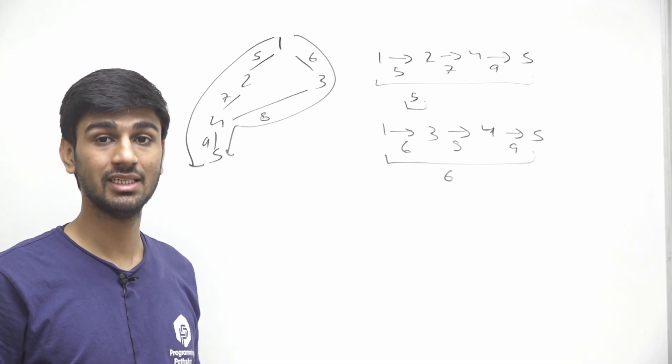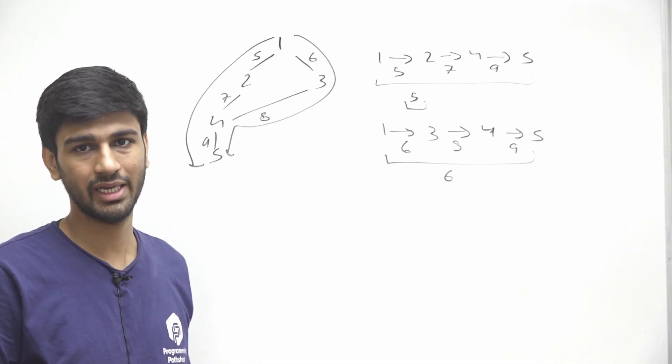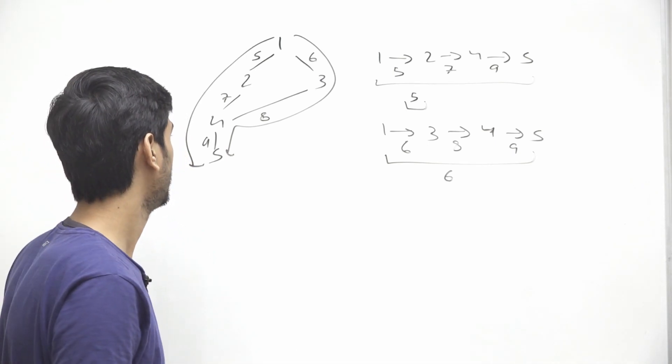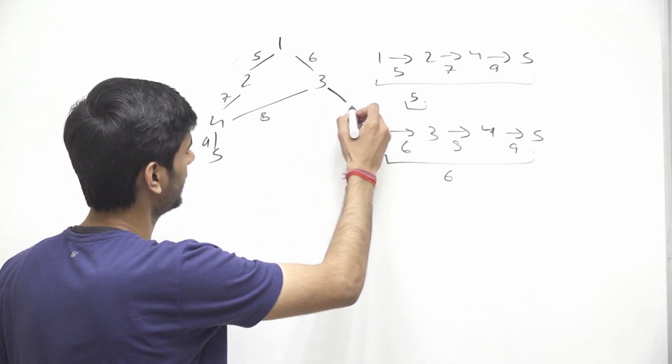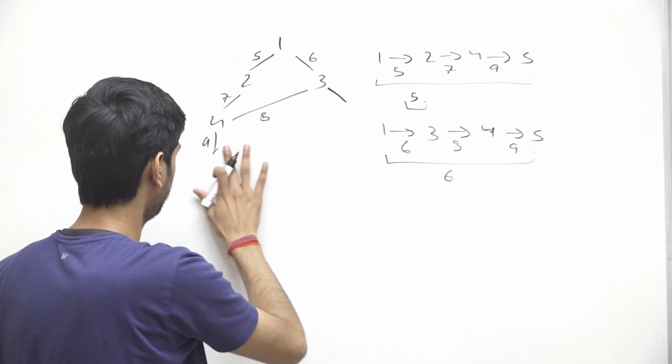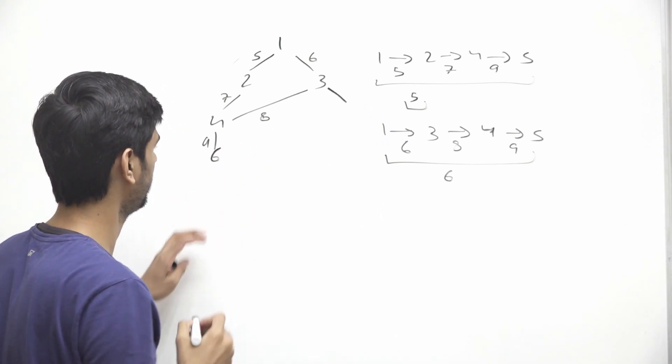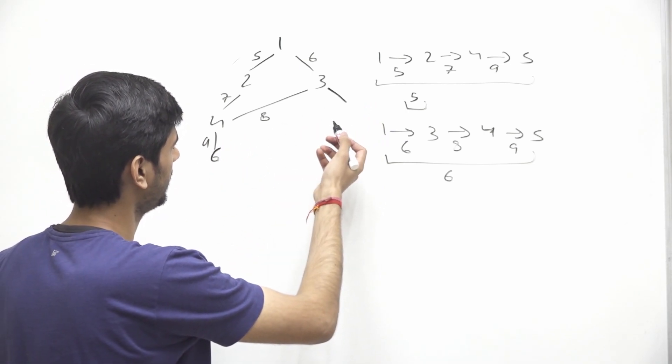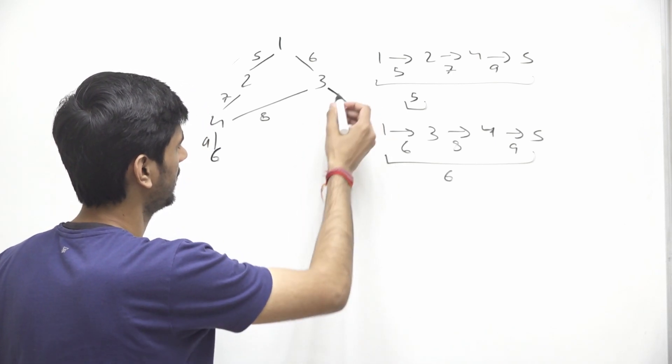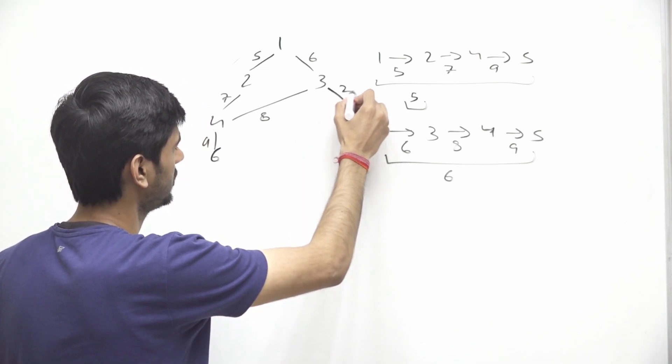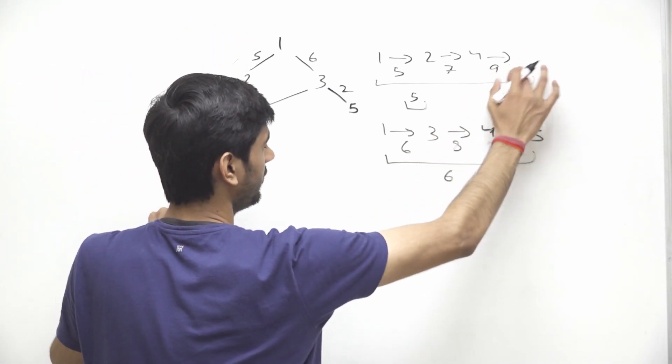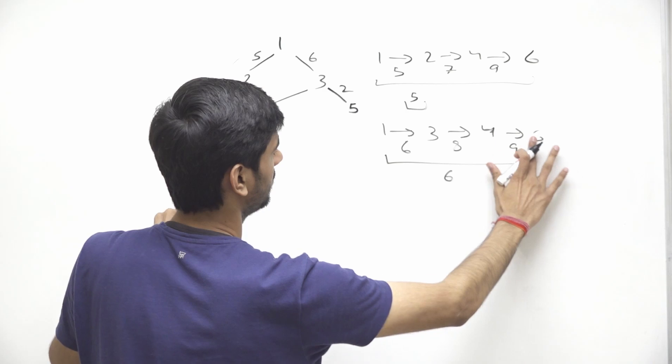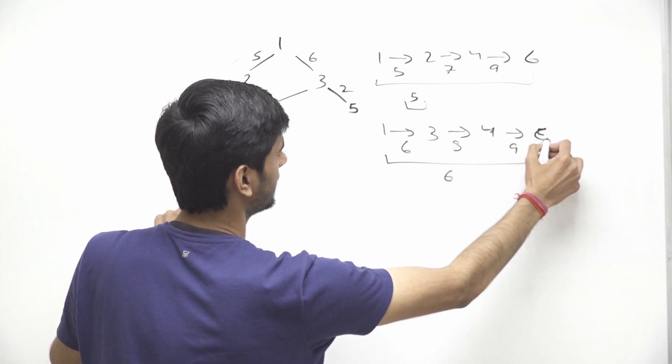And problem statement also says that we can consider the same edge multiple times in our particular path. Now if we have one more node here, let's say, like we have 6 here, let's say, we want, we have 6 here. And let's say we have one more node, 5 here. And the weight of this is 2. Now we want to reach from 1 to 6. So here we will not have 5, we will have 6. And from here we will also have 6, not 5. But the weight will remain same.